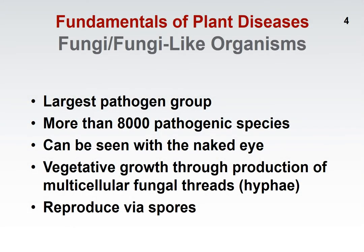The largest group of plant pathogens are the fungi and fungi-like organisms. The fungi-like organisms were originally classified as fungi, but have subsequently been broken out into their own group, and we usually refer to these informally as water molds. There are more than roughly 8,000 different organisms in this particular group that can cause disease. Keep in mind that there are lots of additional fungi in the environment that do not cause plant diseases, but there is a large group of fungi and fungi-like organisms that do.